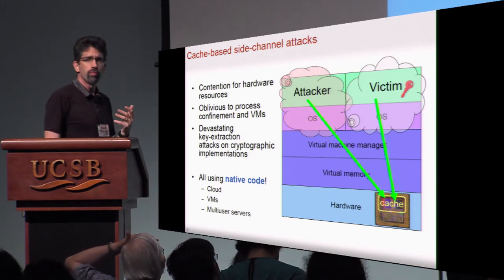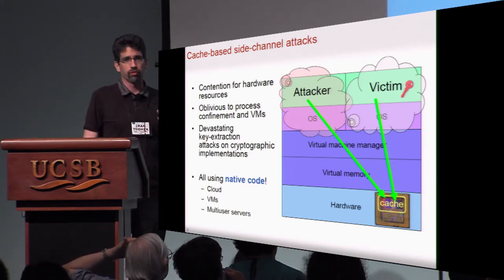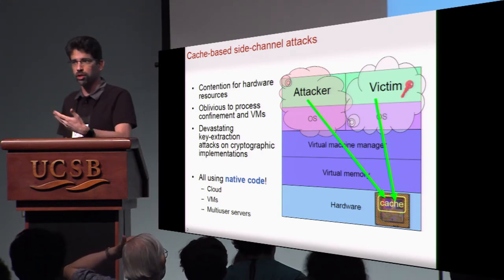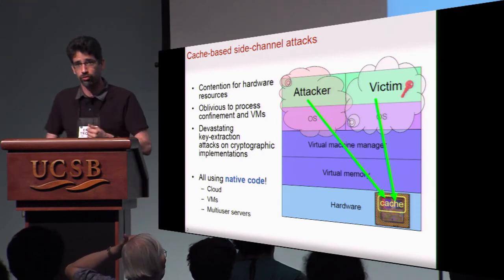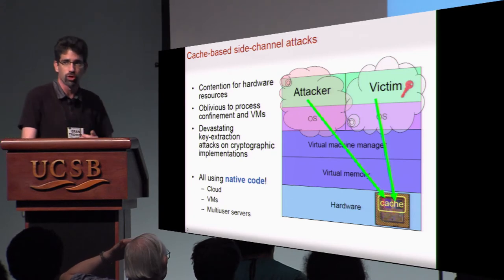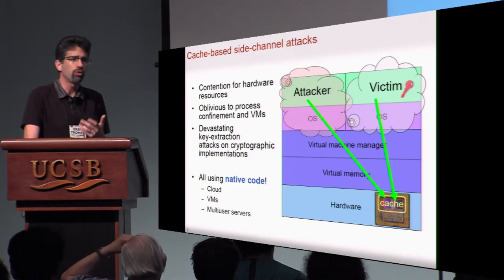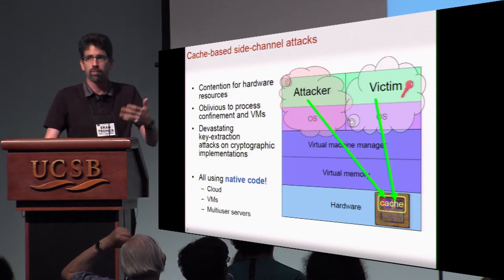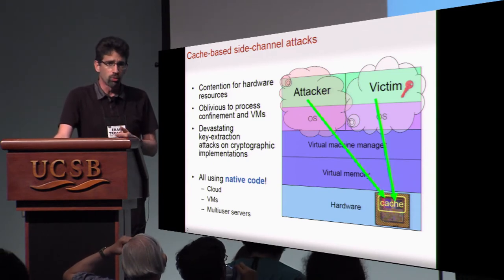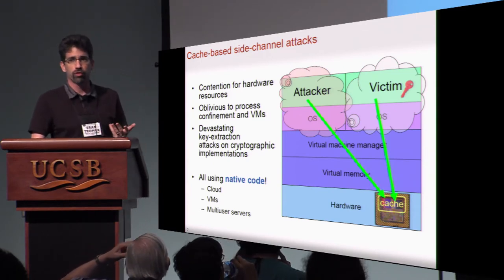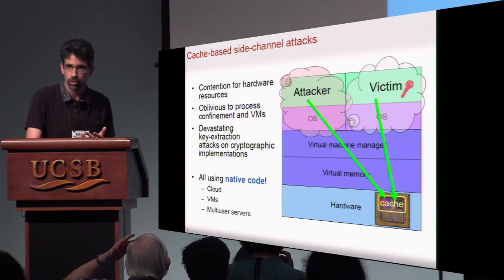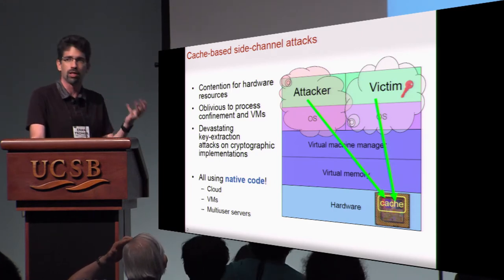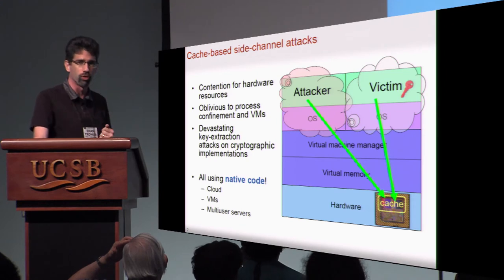However, because cache attacks exploit low-level effects, they use low-level code to access low-level resources, which requires native code execution. How would an attacker get to run their native code on the same platform as a victim? Looking at the prior literature, it makes perfect sense in cloud settings: virtualization, multi-tenancy, multi-user servers, and so on.